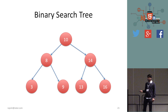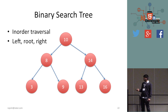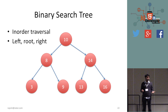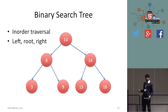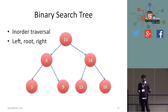Another useful operation on binary search trees is in-order traversal, which prints elements in increasing order. You go left, then root, then right, recursively. Going left, left, left, you print 3, then 8, then 9, then 10 — these come out in sorted order. You can print all elements in O(n) time, which is pretty useful in some cases.